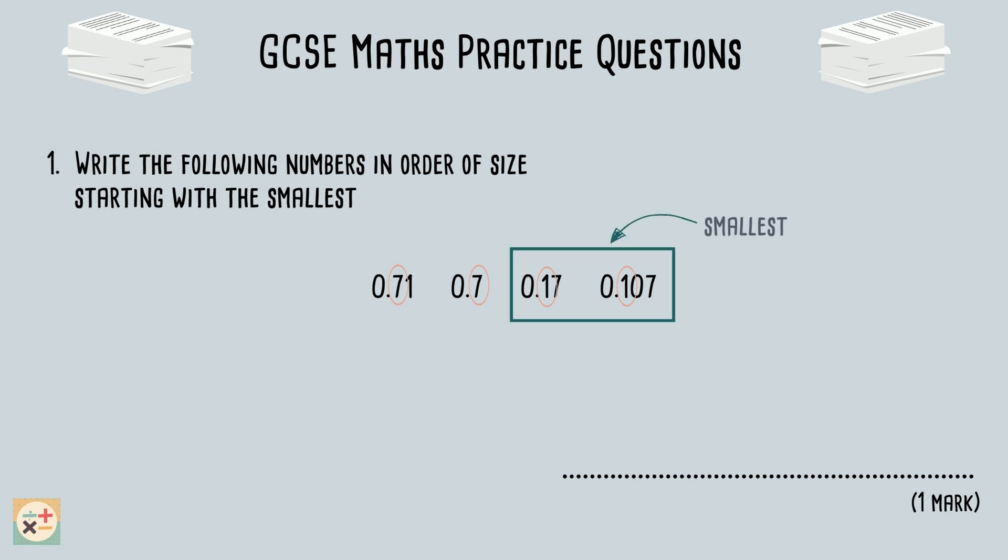These two numbers are the smallest, so we will now focus on these. Let's compare the next digit along for just these numbers. We are looking at the second digit to the right after the decimal point. The first number contains a 7, and the second number contains a 0. As 0 is smaller than 7, we can be sure that this number is the smallest. We can write this number out on the answer section as the smallest number.